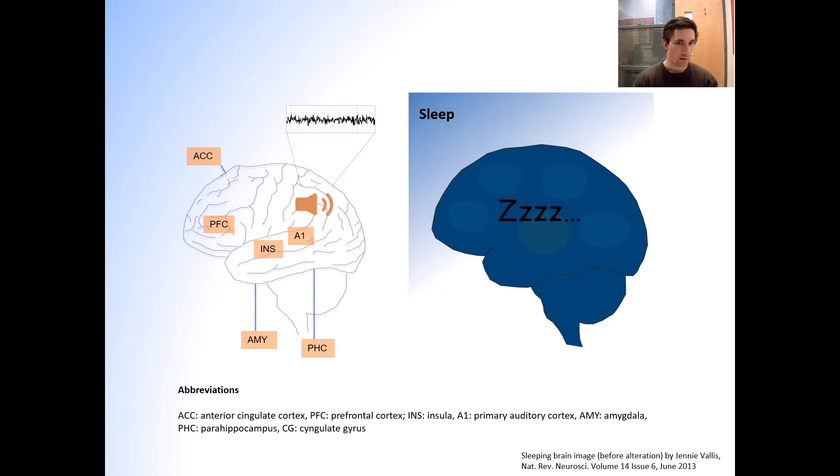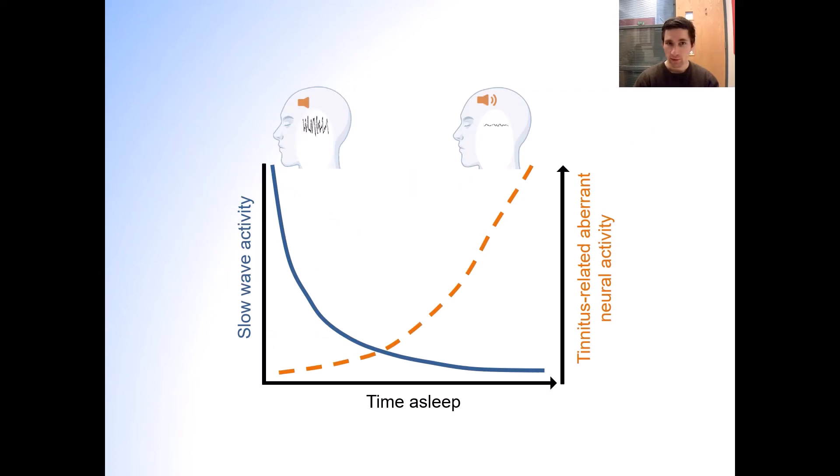On the other hand, if the sleep drive is very high, for example after a period of extended wakefulness, there is evidence to suggest that aberrant activity could be to a degree suppressed. In other words, it is possible that there is a dynamic interaction between the expression of non-REM slow-wave activity and tinnitus-related activity in the brain.